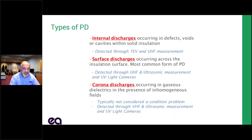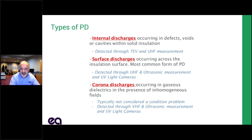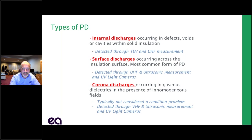We like to break down partial discharge into three types. Internal discharge is the slowest moving, hardest to detect type. This is where you have a void, an air bubble, a delamination — something occurring entirely within the insulation with no access to air. Because of that, it doesn't create ultrasonic energy, so it's not something you can hear with a typical measurement. The best way to detect it is with a transient earth voltage probe, and also UHF measurement. All forms of PD generate some level of radio interference, and internal discharge creates UHF radio waves that we can detect.